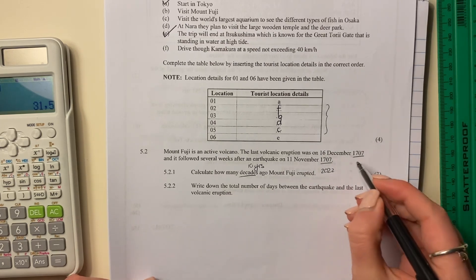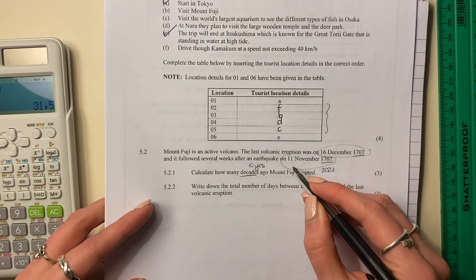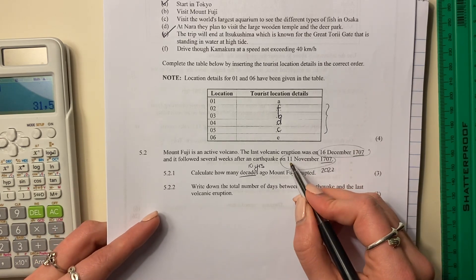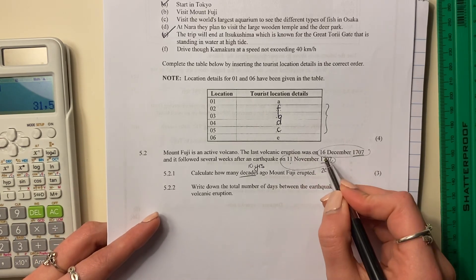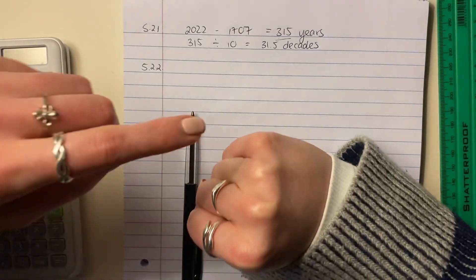Write down the total number of days between the earthquake and the last volcanic eruption. Okay, so remember, there was a volcanic eruption then, and there was an earthquake then. So we basically say, well, how many days is it from the 11th of November until the 16th of December? Now, how many days are there in November? Here's a little trick for you.